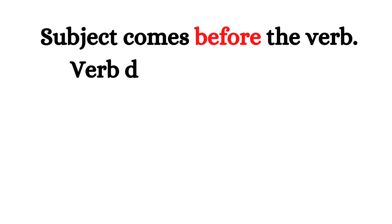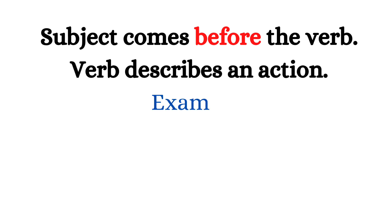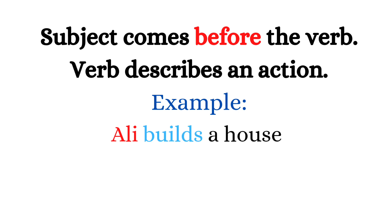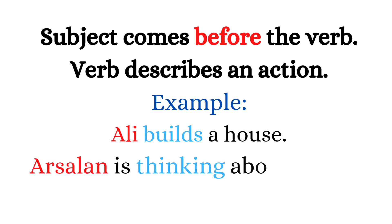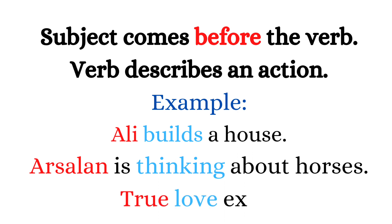The next part of the definition is that the subject comes before the verb, and the verb describes an action. Let's take an example: Ali builds a house. What action is performing here? Build — so build is a verb. Who is performing the action? Ali — so Ali is the subject. You can see the subject comes before the verb. Arsalan is thinking about horses. What action is performing here? Thinking. And who is performing the action? Arsalan. So Arsalan is the subject and thinking is the verb.